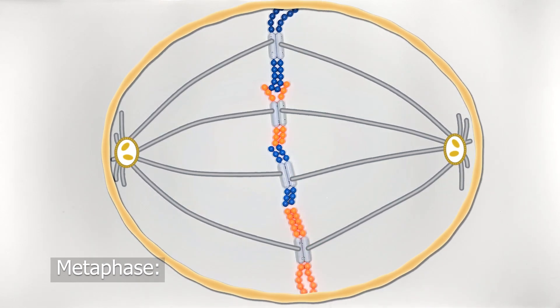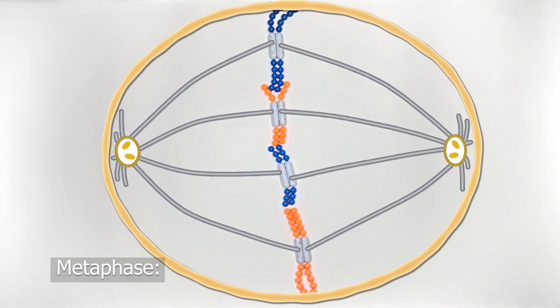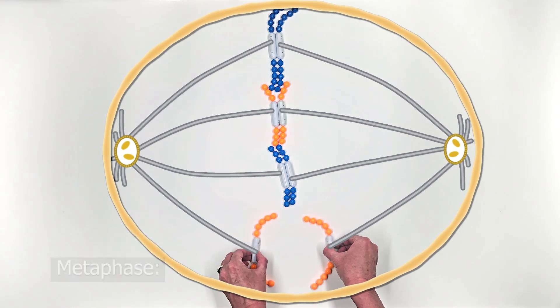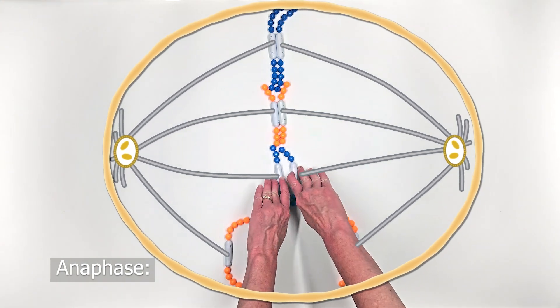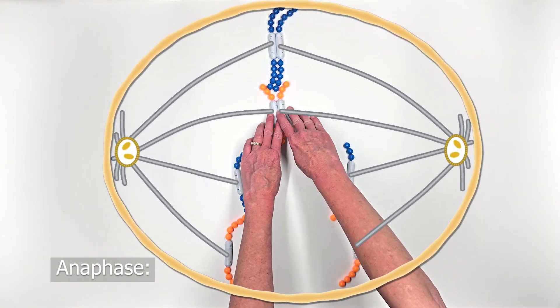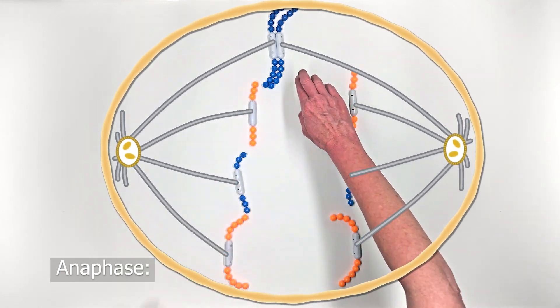In anaphase, the duplicated chromosomes are going to be separated. So the two sister chromatids are pulled in opposite directions to opposite poles of the cell.